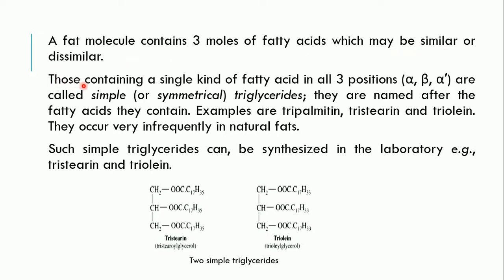A fat molecule contains three moles of fatty acids, which may be similar or dissimilar. Those containing a single kind of fatty acid in all three positions — alpha, beta, and alpha-prime — are called simple or symmetrical triglycerides. They are named after the fatty acids they contain; for example, tripalmitine, tristearine, and triolein. Such simple triglycerides occur very infrequently in natural fats but can be synthesized in the laboratory.